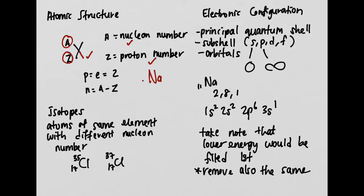For example, if I have sodium, the proton number is going to be 11, and the electron number in a neutral atom should be the same as the number of protons — also 11. The nucleon number for sodium is 23. To find the number of neutrons, we take 23 minus 11 and get 12. That's the number of neutrons.